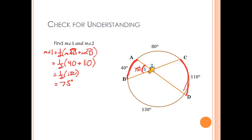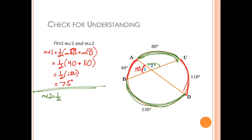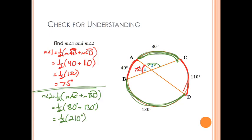Since angle one is 75 degrees, angle two is angle one's supplement, so I could just take 180 minus 75. But for the sake of practice, let's work it out using our theorem. The measure of angle two is one-half the measure of arc AC plus arc BD. AC has a measure of 80 degrees and BD has a measure of 130 degrees. So that's one-half of 210 degrees, which is 105. That makes sense because we said it would be supplementary to angle one. That's a level one problem — strictly applying the theorem we just learned.